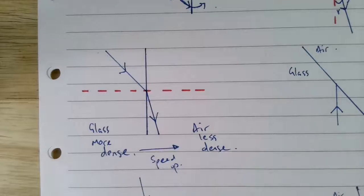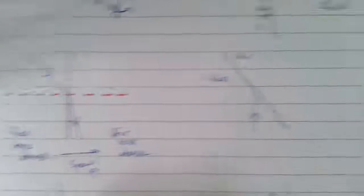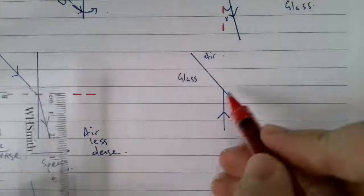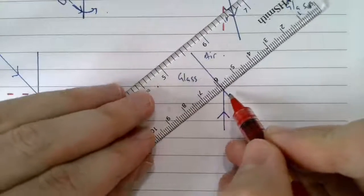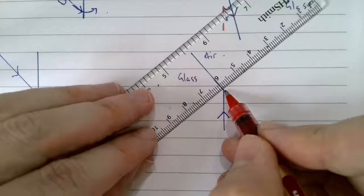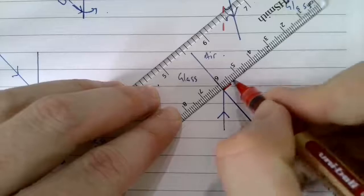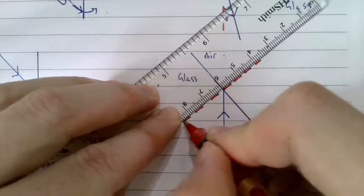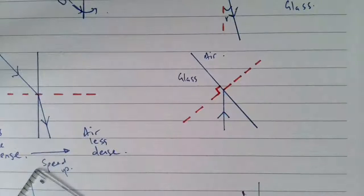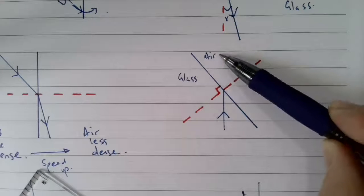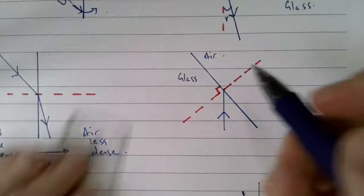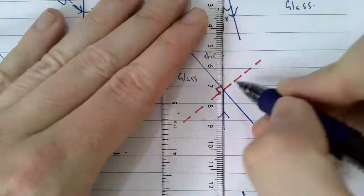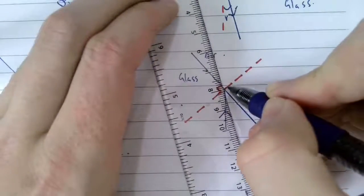If you're unsure, pause and rewind. Now it gets a little trickier — how do you draw the normal when the boundary is at an angle? You look at where the light is hitting the surface and draw the normal perpendicular to that boundary. We're going glass to air, more dense to less dense, so it speeds up and bends away from the normal.